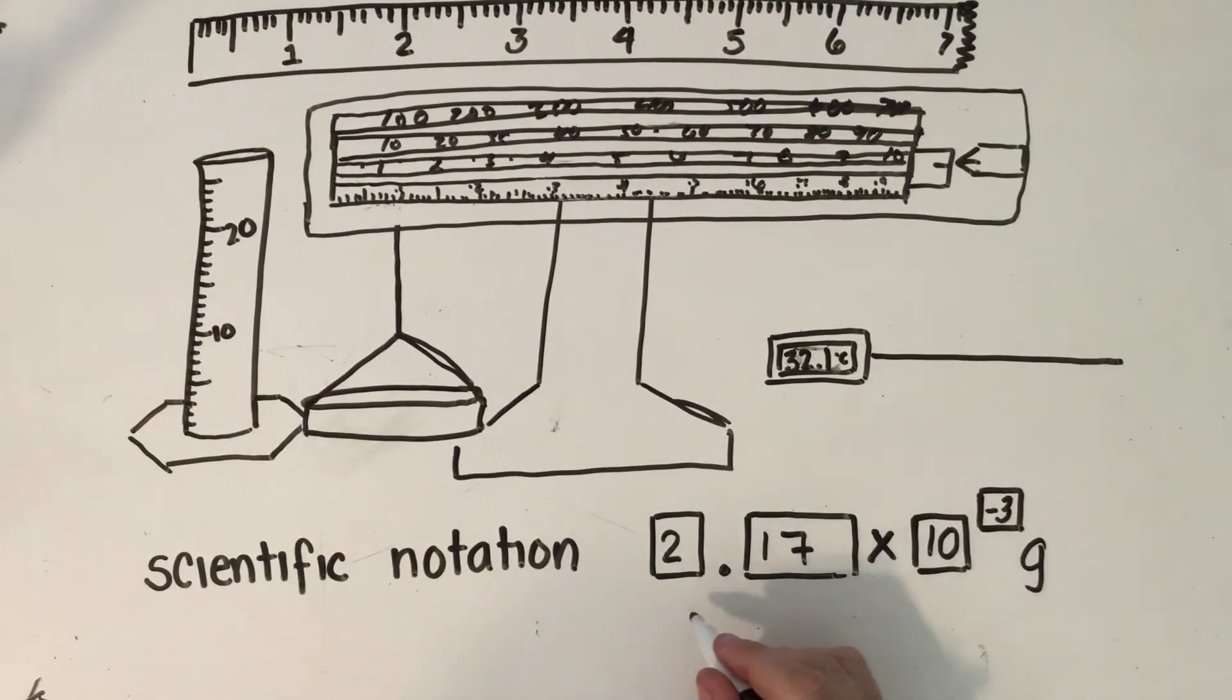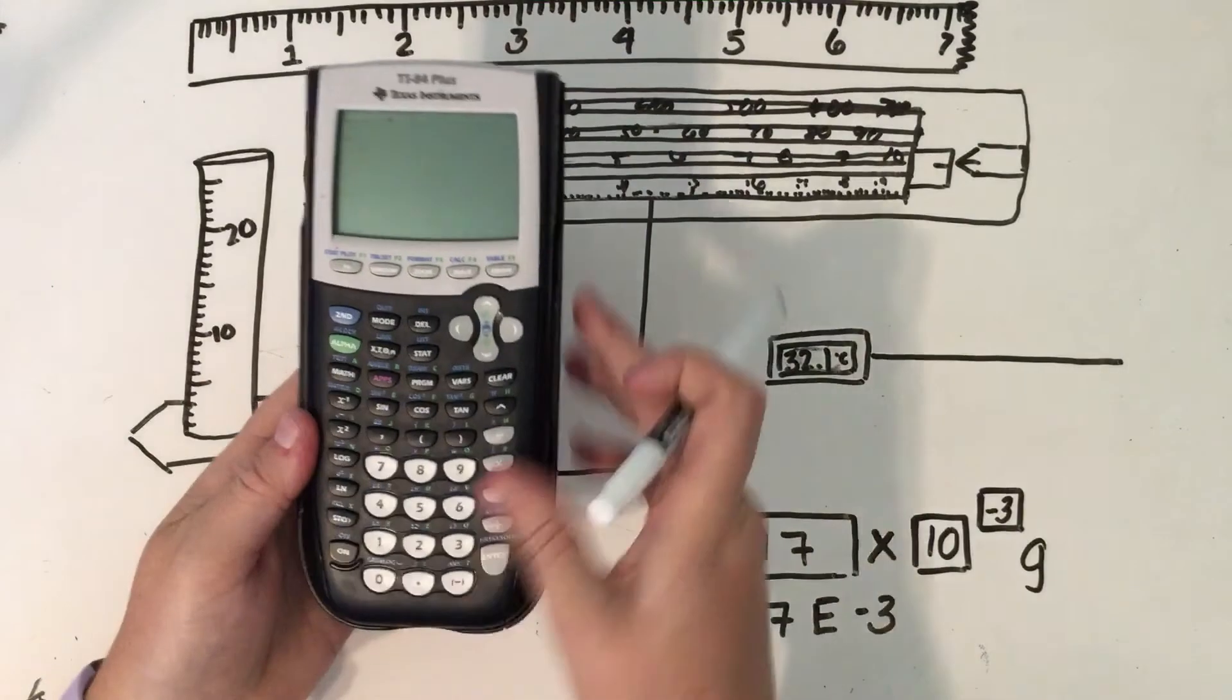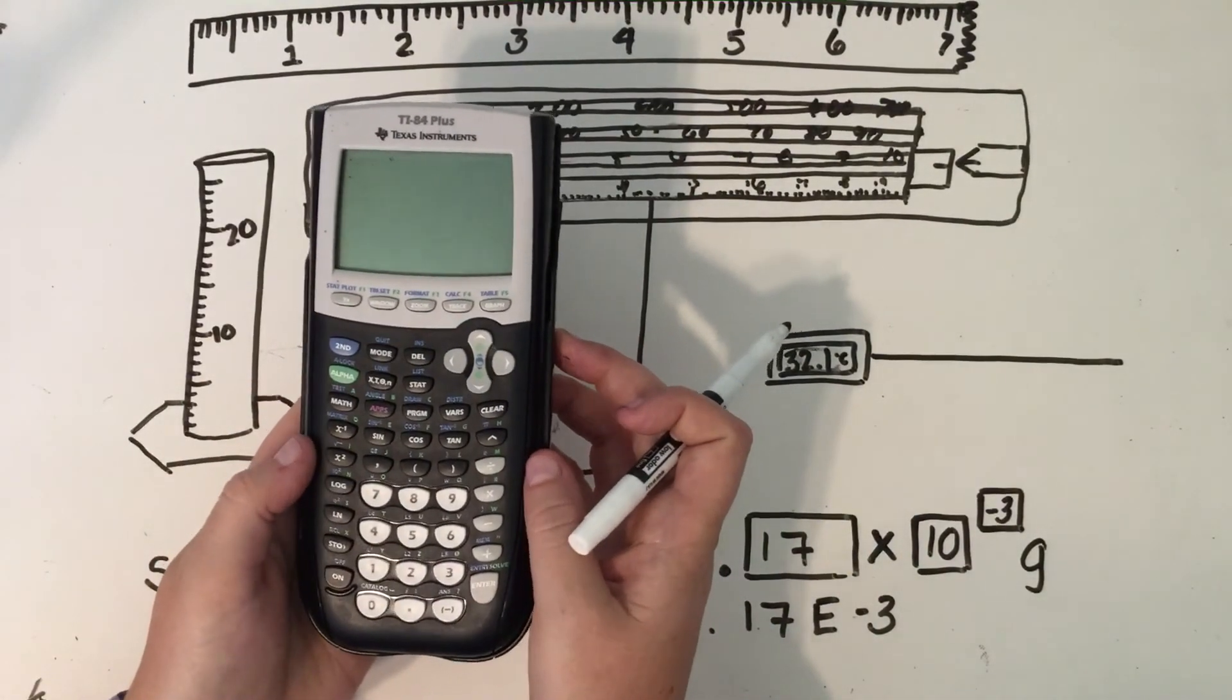You could also write this answer as 2.17 capital E negative 3. The E here just means times 10 to the, and that actually corresponds really well to your calculators.